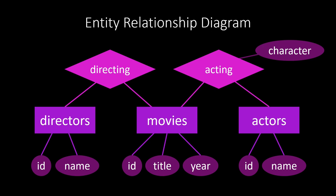Each relationship edge is annotated by either N or 1. The annotation N indicates that many entities can be involved in that relationship. Regarding the relationship for acting, both edges are annotated by N, meaning an actor can play in many movies, and a movie can also have many actors. The directing relationship has a 1 and an N edge: every director can direct many movies, but every movie has at most one director. This is not really true in practice, but in our database we insist on that for educational reasons.